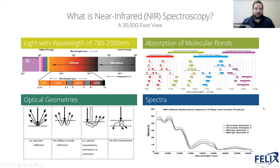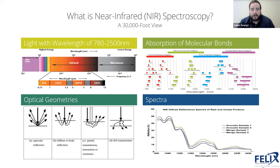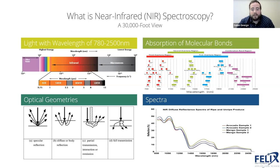So what is near infrared spectroscopy, or NIR spectroscopy, sometimes also referred to as NIRS? From a 30,000 foot view, NIR spectroscopy is essentially shining a light source onto a sample and then receiving back information into a detector that allows us to acquire what we call a spectra. There's a lot more nuance to that, so I'll talk a little bit more detail so that you can understand exactly why it's a useful tool.